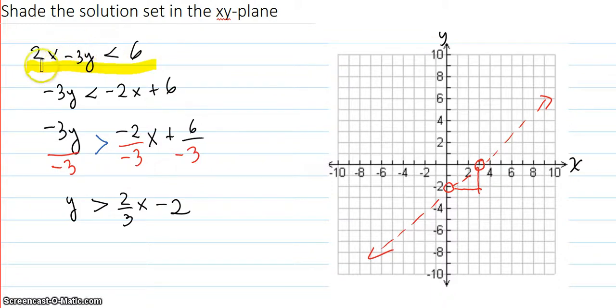So you subtract 2x from both sides. That cancels it off of here and puts it over there as negative 2x. So now you're here.